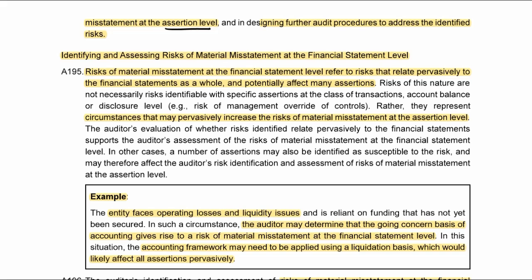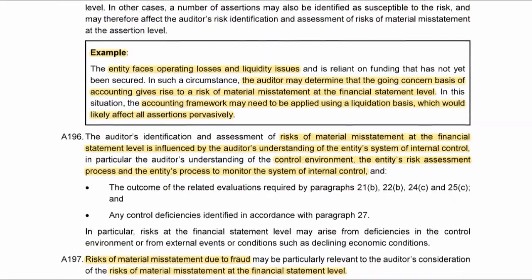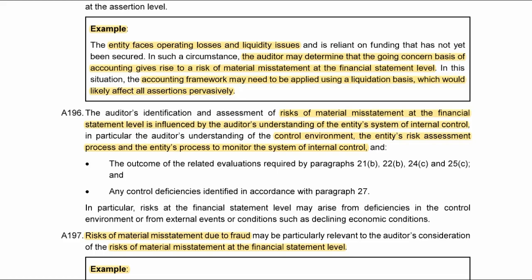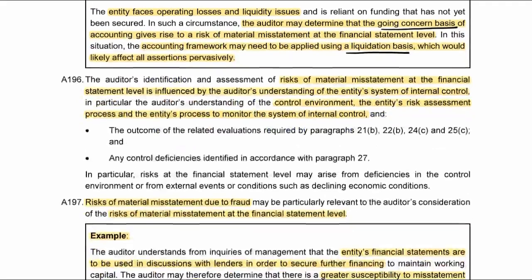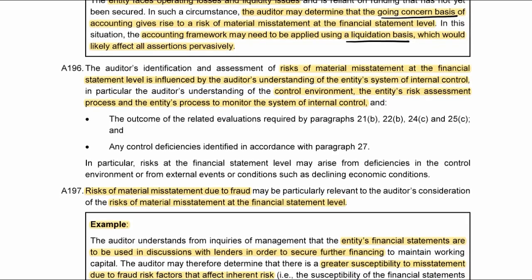In identifying and assessing risks at the financial statement level, we've got to assess how it pervasively affects the financials as a whole, and understand that this could increase risk at the assertion level. They give an example: if the entity has liquidity issues, the going concern basis could be incorrect. The proper basis — liquidation — would be more appropriate, but if they still record on the going concern basis it's incorrect and the financials could be materially misstated.